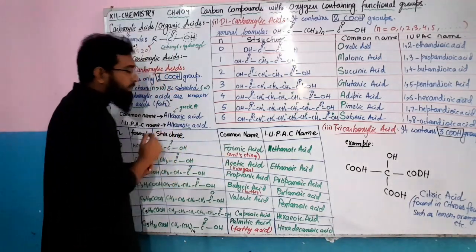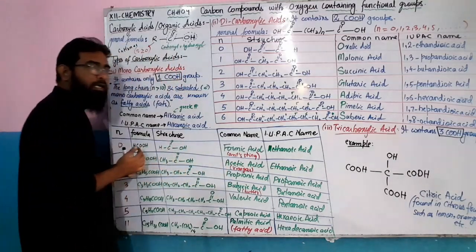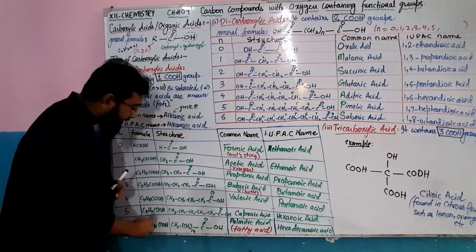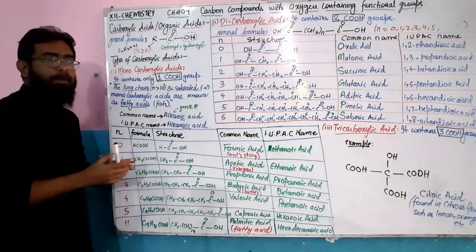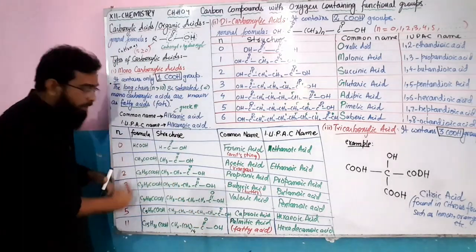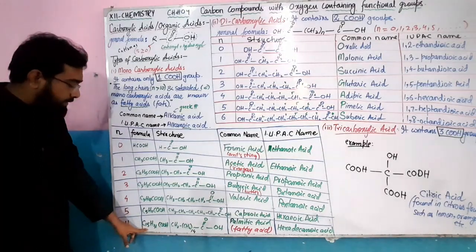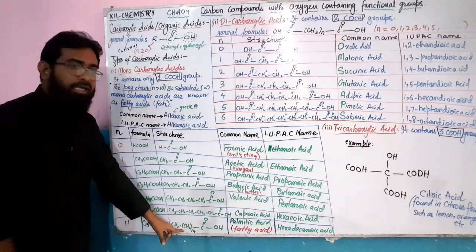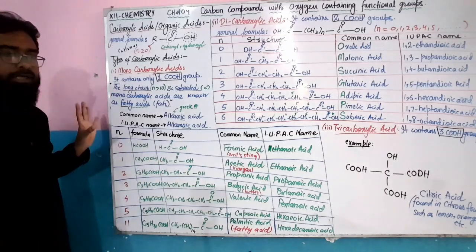Formic acid is called ant acid — it comes from ants. Acetic acid is called vinegar or sirka. Butyric acid is called butter or makhan. The last example, C15H31-COOH, is palmitic acid. Palmitic acid is found in plants, fats, and coconut. It is a fatty acid because its carbon chain has 10 or more carbons and all single bonds — a saturated long-chain monocarboxylic acid.